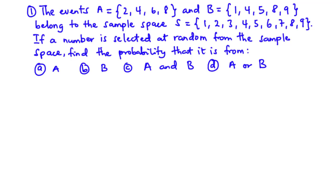Let's try the first question. Event A has elements 2, 4, 6, and 8. Event B has elements 1, 4, 5, 8, and 9, and both belong to sample space S which has elements 1 through to 9. If a number is selected at random from the sample space, find the probability that it is from A, B, A and B, and A or B.